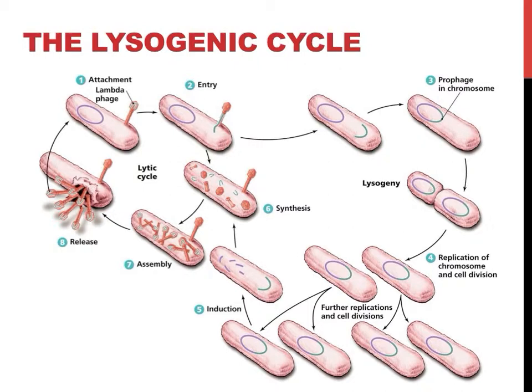As the cell reproduces through mitosis or binary fission, each new daughter cell contains a copy of the viral DNA. At any point, as shown in this picture, the virus can leave the lysogenic cycle and jump into the lytic cycle.